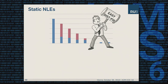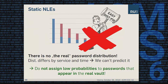However, adapting the distribution is not a good idea because there is no single real password distribution — distributions differ by service and they differ by time. This is an inherent flaw of all static Natural Language Encoders: they need to predict a distribution during setup time, and we cannot predict it. So we have a better approach.